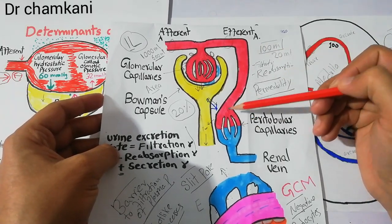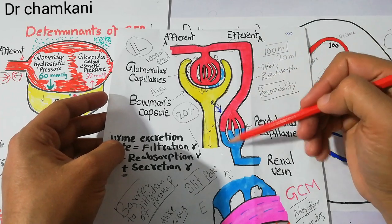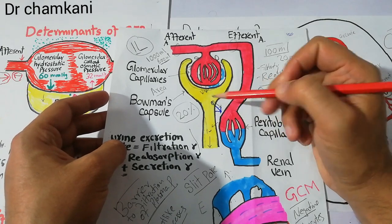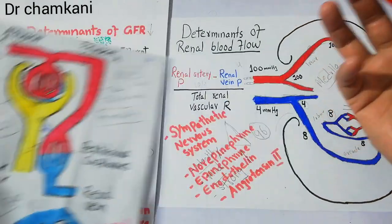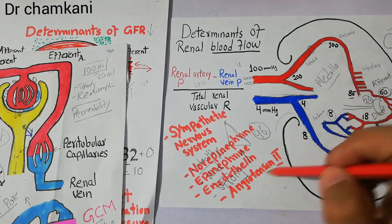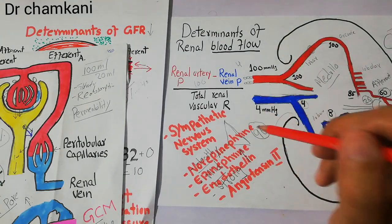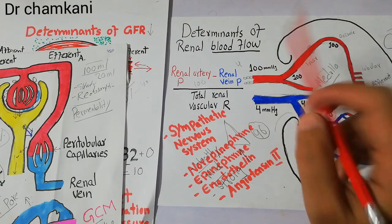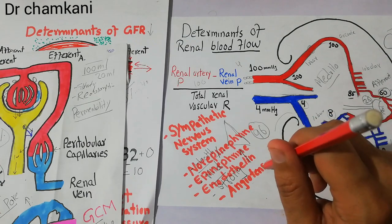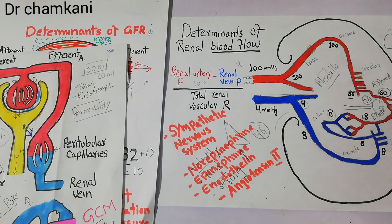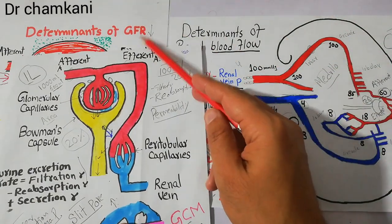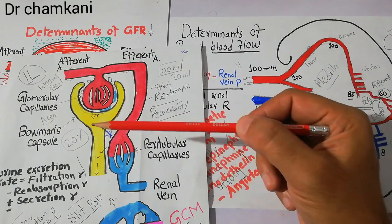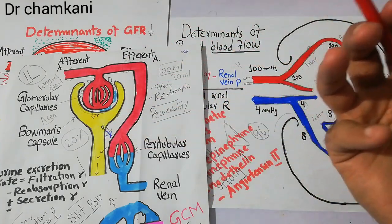As the efferent arteriole is constricted, blood flow in the peritubular capillaries falls, which leads to increased sodium and water reabsorption. So the importance of efferent arteriole constriction by angiotensin 2 is: whenever arterial pressure falls due to volume depletion or hemorrhage, angiotensin 2 helps to restore the GFR at the same time as promoting increased reabsorption of water and sodium.